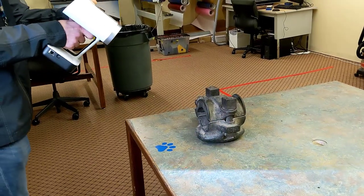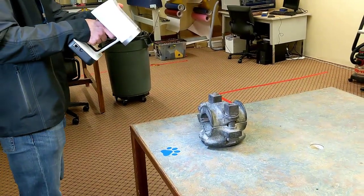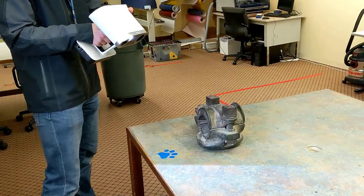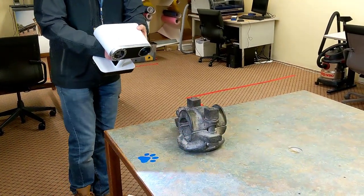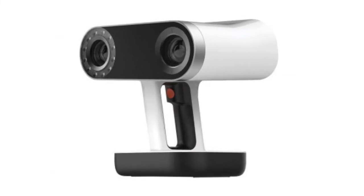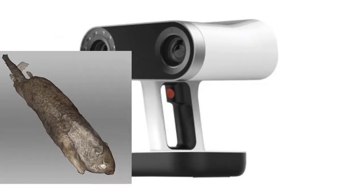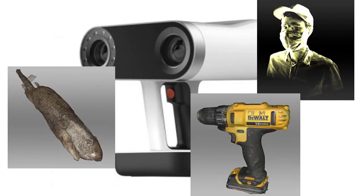The images are automatically aligned in real-time, and instant feedback is available on the HD screen. The editing process will be similar with the Artec Studio program. With the Leo, our Makerspace scanned objects such as taxidermy squirrels, humans, and even a drill.